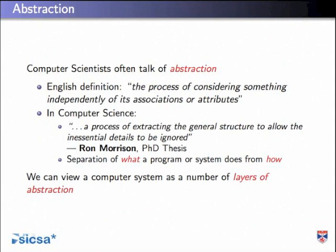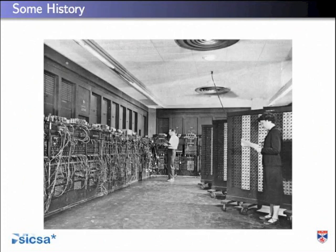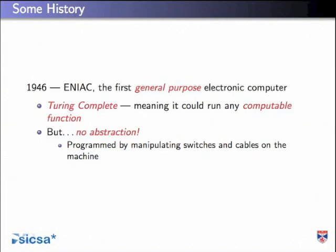A computer system really is just a series of layers of abstraction, starting right down at the microcode level and then moving up to the way we communicate with it. This early computer is ENIAC — according to Wikipedia, the first general purpose electronic computer, and Turing complete, which means you could use it to solve any computable problem. But it didn't have any abstraction. If you wanted to solve any problems on it, you had to move wires around and flick switches. Later on, we get stored programs — EDSAC — with programs stored in memory as binary data.